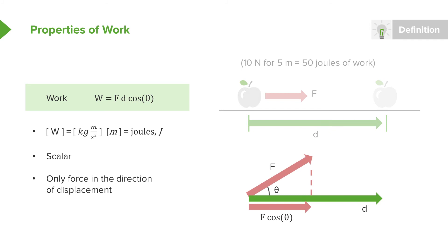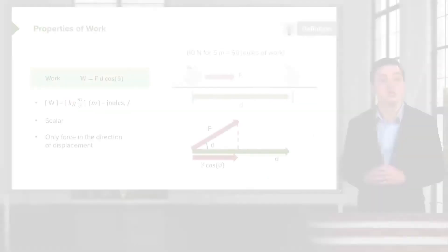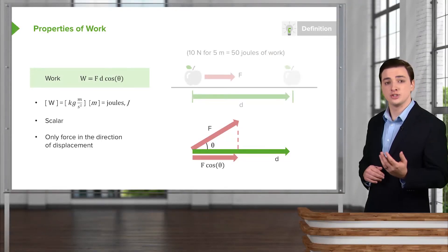There's one more nuance here, which is that we have a cosine of theta term in the expression for work. And the reason that's there is because work only cares about a force in the direction of the displacement, only in the direction of our motion. So to find the amount of force in the direction of our motion...